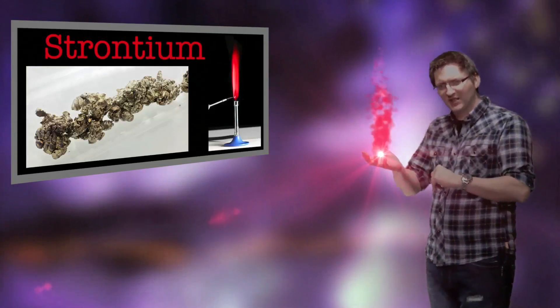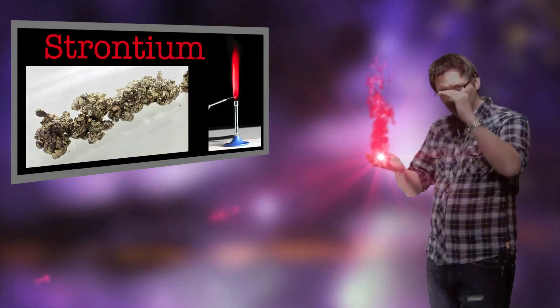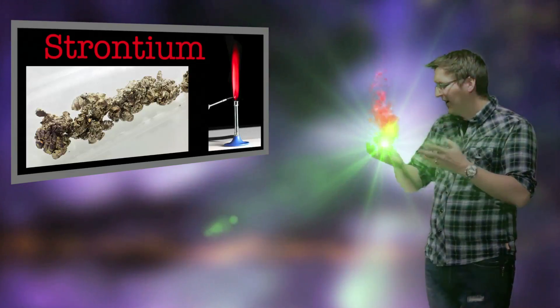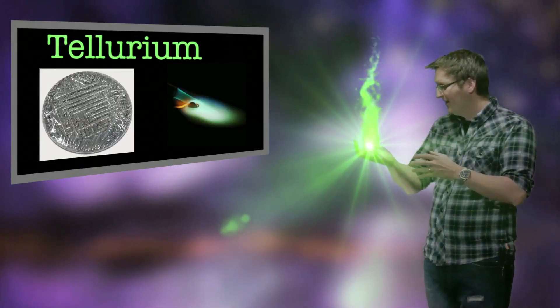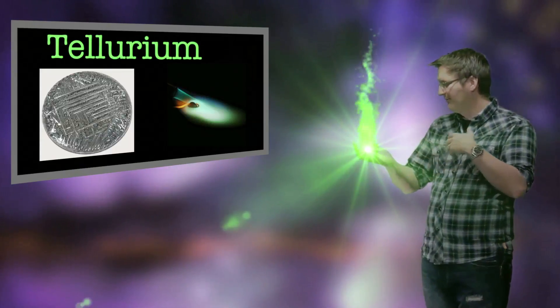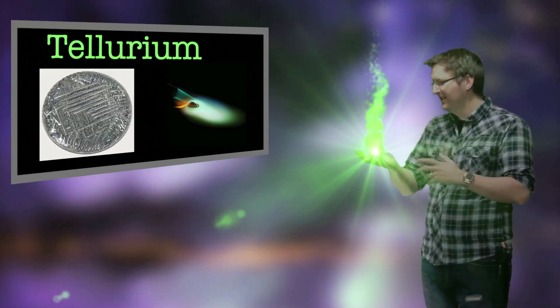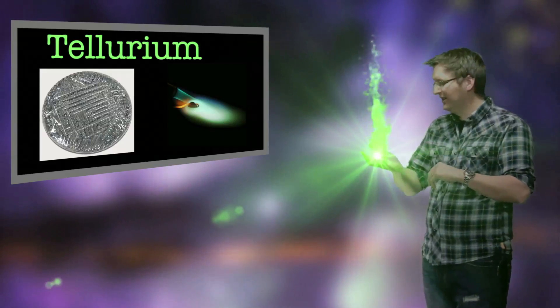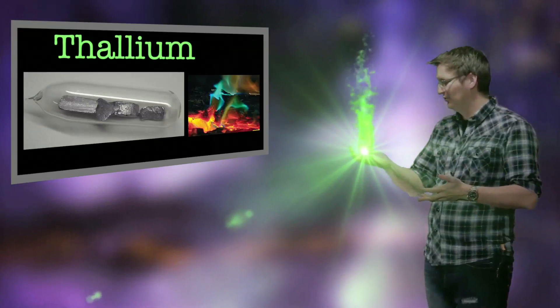And I'll put a list of all these elements up so you can have a look at how I'm going through them alphabetically. Then we've got tellurium here. Tellurium's more of a pale green again. So a lot of greens here. Another green one would be thallium. Thallium's green.